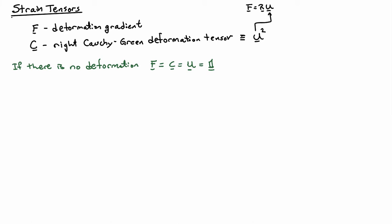But when we talk about strain, strains are usually defined to be zero when there is no deformation. And none of these tensors that we've introduced, F, C, and U, are equal to zero when there is no deformation.